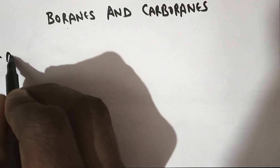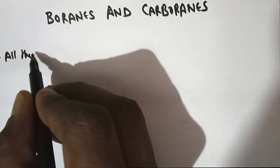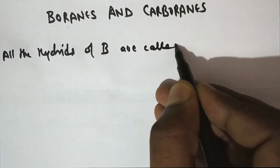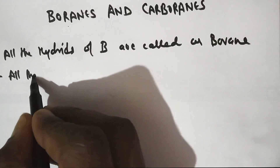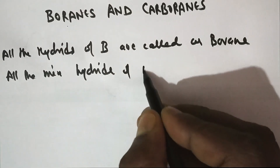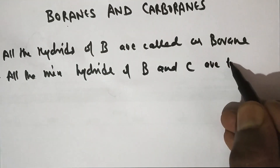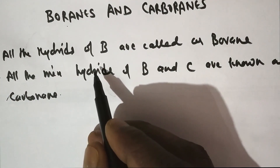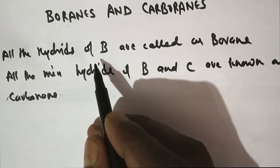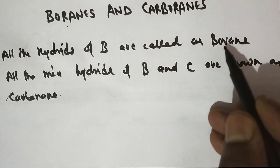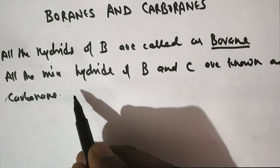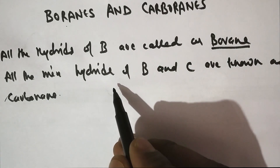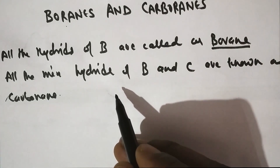First, all the hydrides of boron are called boranes. And all the mixed hydrides of boron and carbon are known as carboranes. That means all molecules made up of only boron and hydrogen come under the category of boranes. And if a molecule has boron and carbon along with hydrogen atoms, then this category will be known as carboranes.